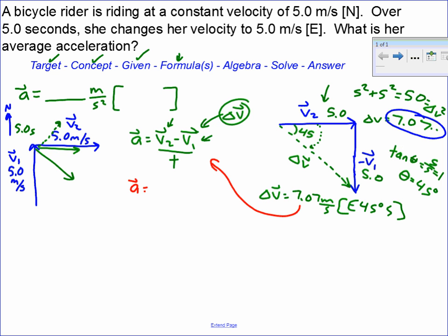Now we're going to take this back over and put it in this equation. Our acceleration is equal to delta v over t, so it's going to be the square root of 50, east 45 degrees south, divided by 5.0 seconds.